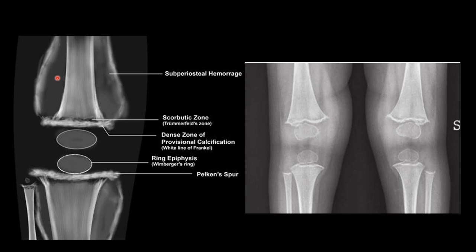Scurvy is basically a deficiency of vitamin C, because of which hydroxyproline is not formed. Therefore collagen is not formed, therefore the bone matrix is weak, and it leads to osteoporosis. This is one of the previously asked MCQs. The radiological findings include the white line of Frankel.